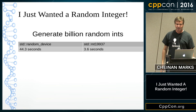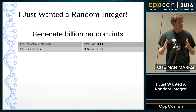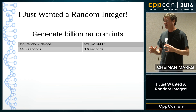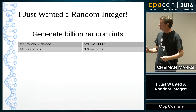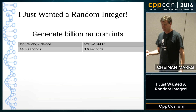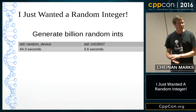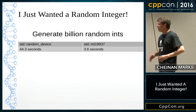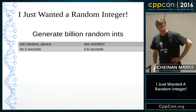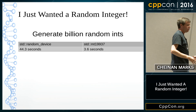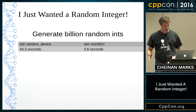I said the Mersenne Twister is faster than random_device — and I'm an engineer, so I measured it. I wrote a loop that generates a billion random ints. When I used random_device it took 44 seconds; when I used the Mersenne Twister it took 3.6 seconds. Sure enough, the Mersenne Twister is fast.